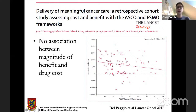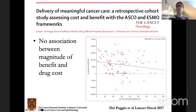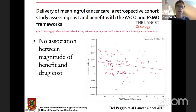A follow-up piece published in Lancet Oncology asked whether there was a relationship between the magnitude of benefit of a new cancer therapy and the drug cost. In most contexts, spending more money gets you a better product, but that standard relationship does not apply to cancer medicines. If anything, there's an inverse relationship — the drugs with the smallest benefit have the largest cost — which speaks to the fact that the drug pricing ecosystem is completely broken and really needs to be overhauled.